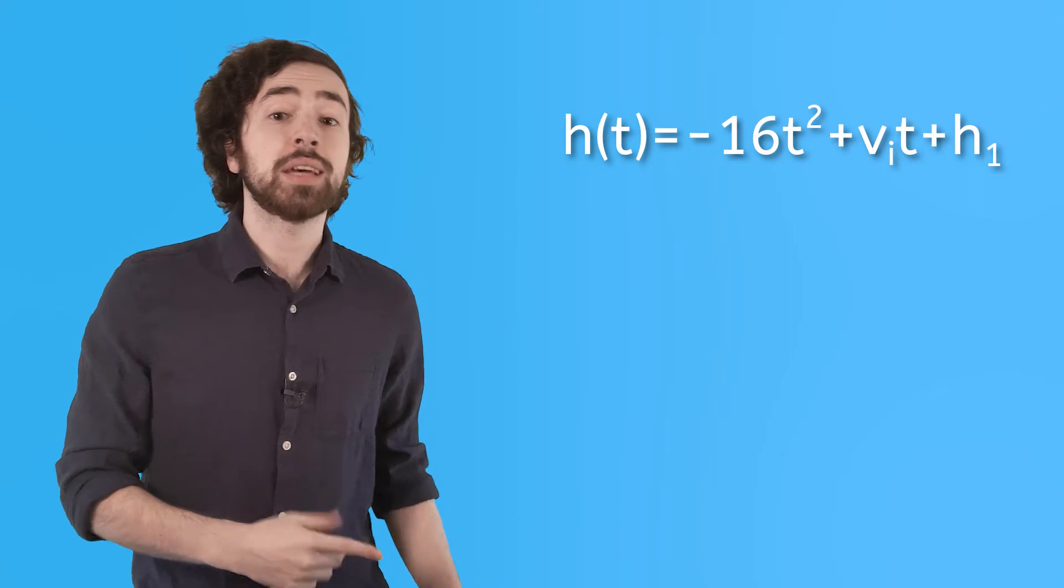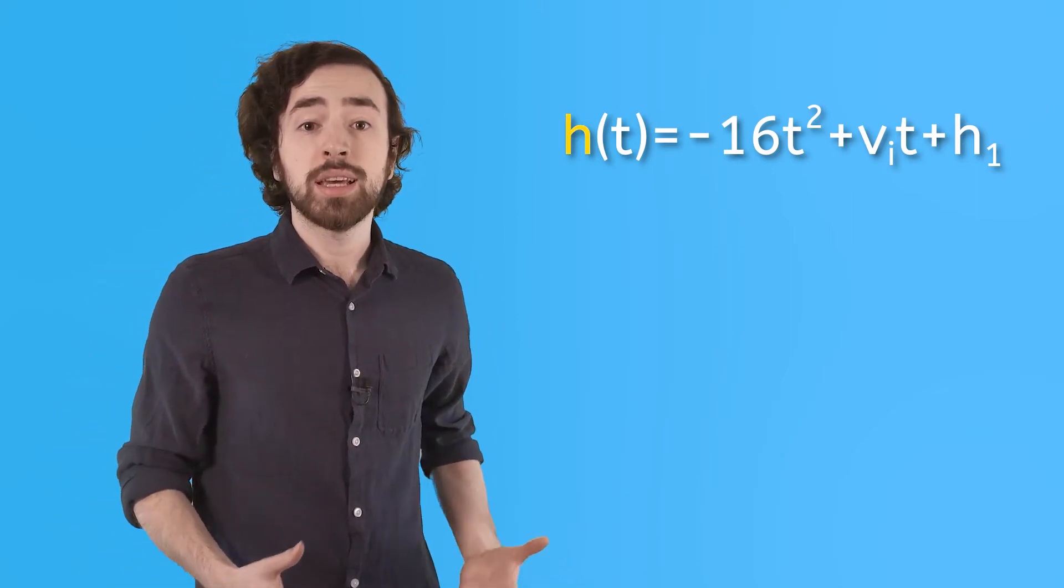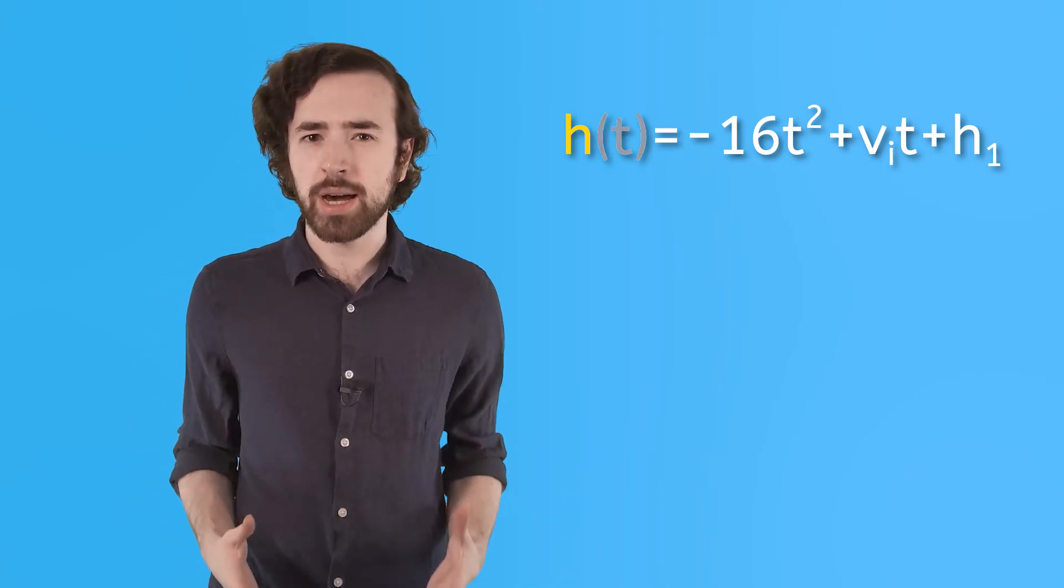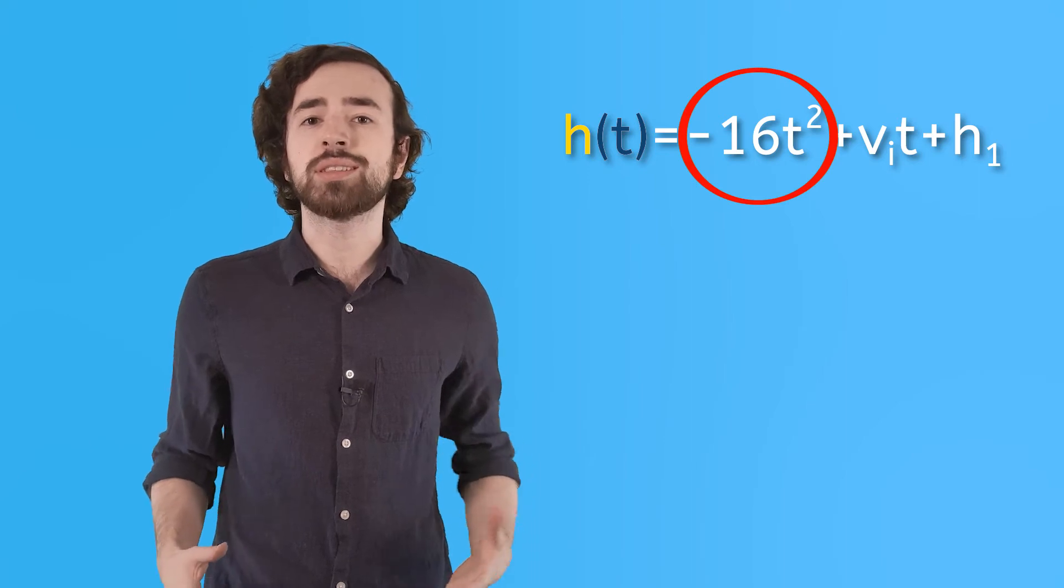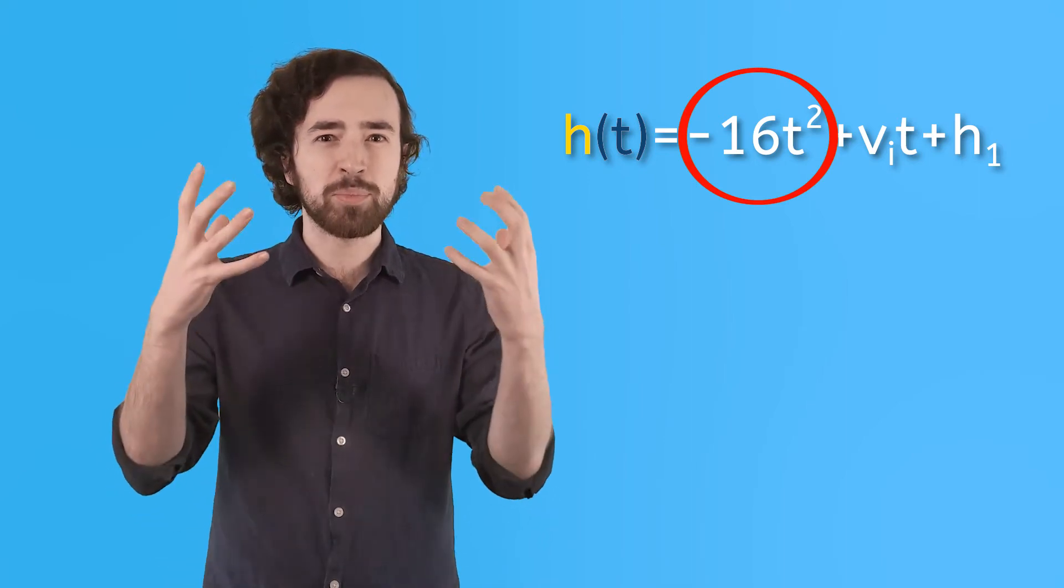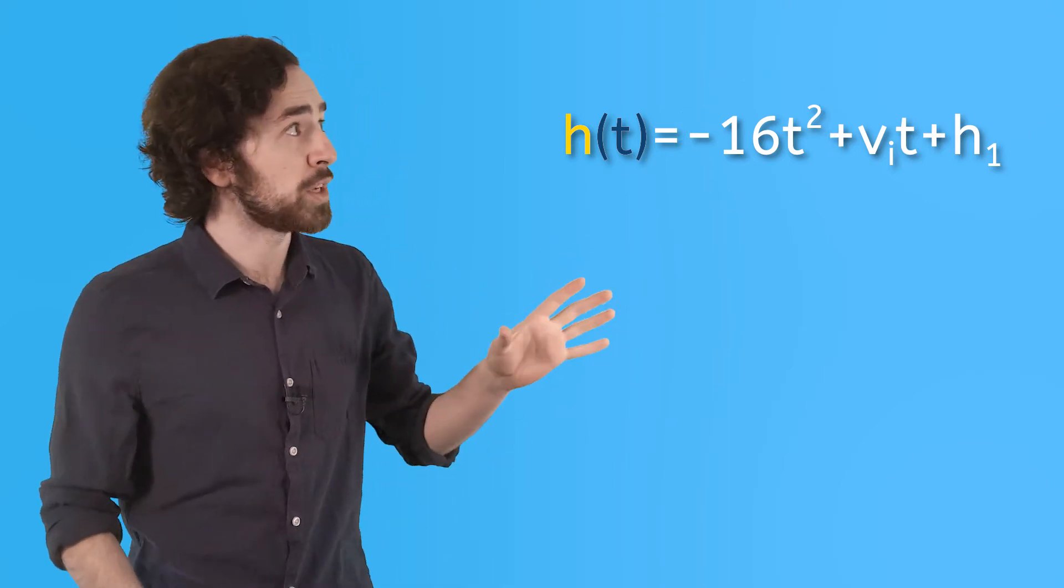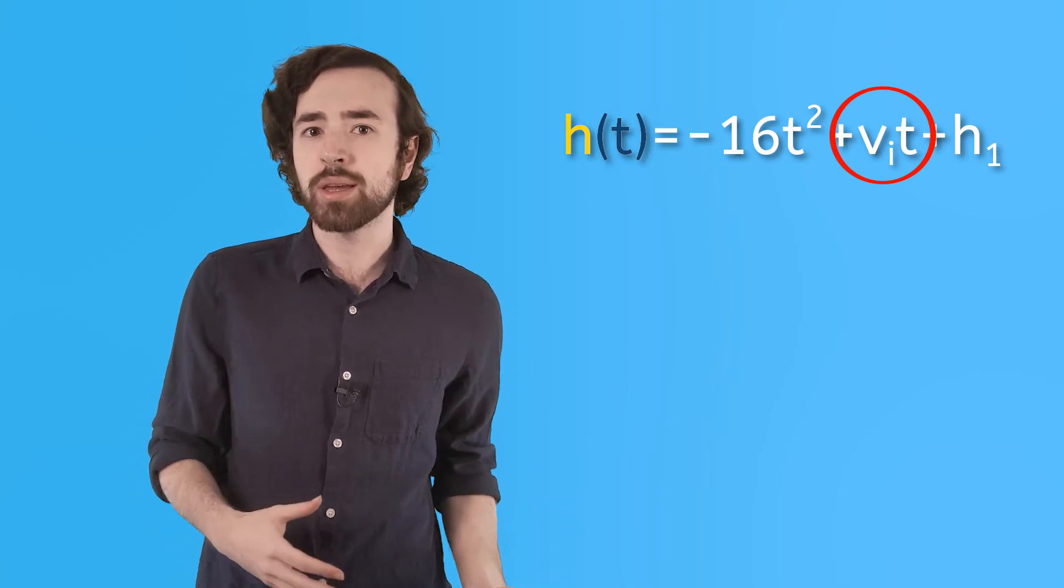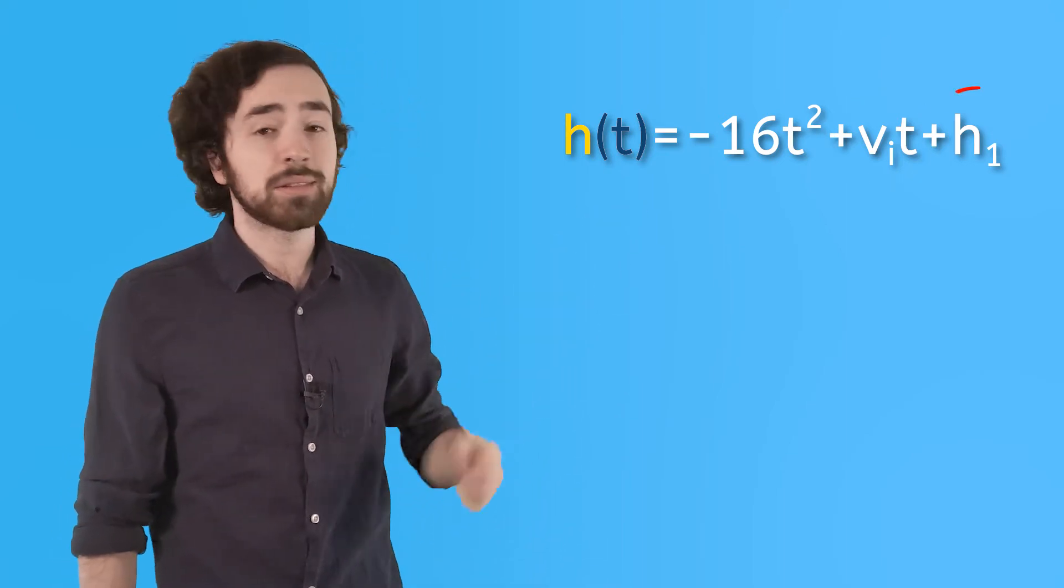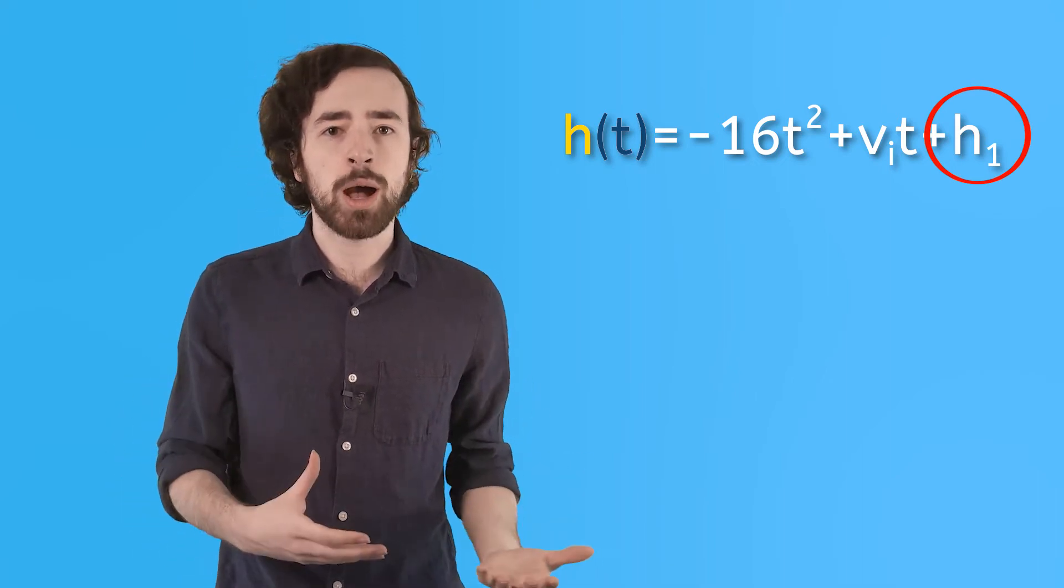Don't believe me? Well, here is an equation that tends to come up a lot in the real world. It shows that the height of a falling object is expressed as a function of time. This first square term at the beginning of the equation represents the object's acceleration due to gravity pulling it faster and faster towards the Earth. That first-degree term in the middle represents the object's initial velocity, or starting speed. And finally, that constant at the end represents the object's initial height, where it's first dropped or thrown.